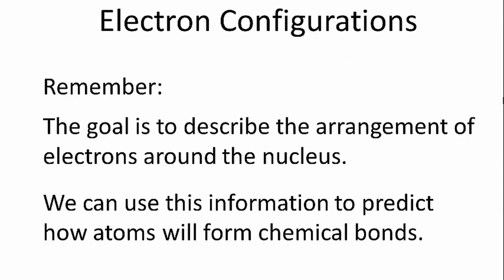Remember that when we're doing electron configurations, we're just putting electrons around the nucleus in the pattern that we find them in nature. That's all. We can use this information to predict how atoms form chemical bonds and how they behave. So it's very useful to help us understand chemical bonding.